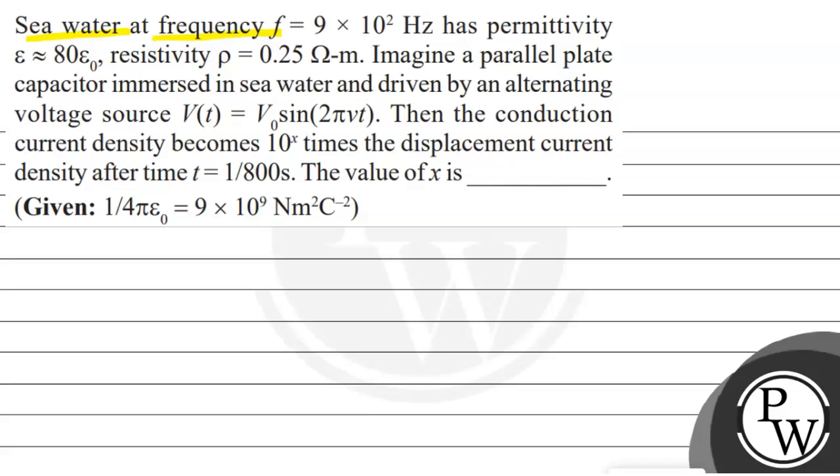The question says that seawater at frequency f equals 9 into 10 to the power 2 hertz has permittivity epsilon equals 80 epsilon naught, resistivity rho equals 0.25 ohm meter. Imagine a parallel plate capacitor immersed in seawater and driven by an alternating voltage source V(t) equals V naught sine 2 pi nu t.